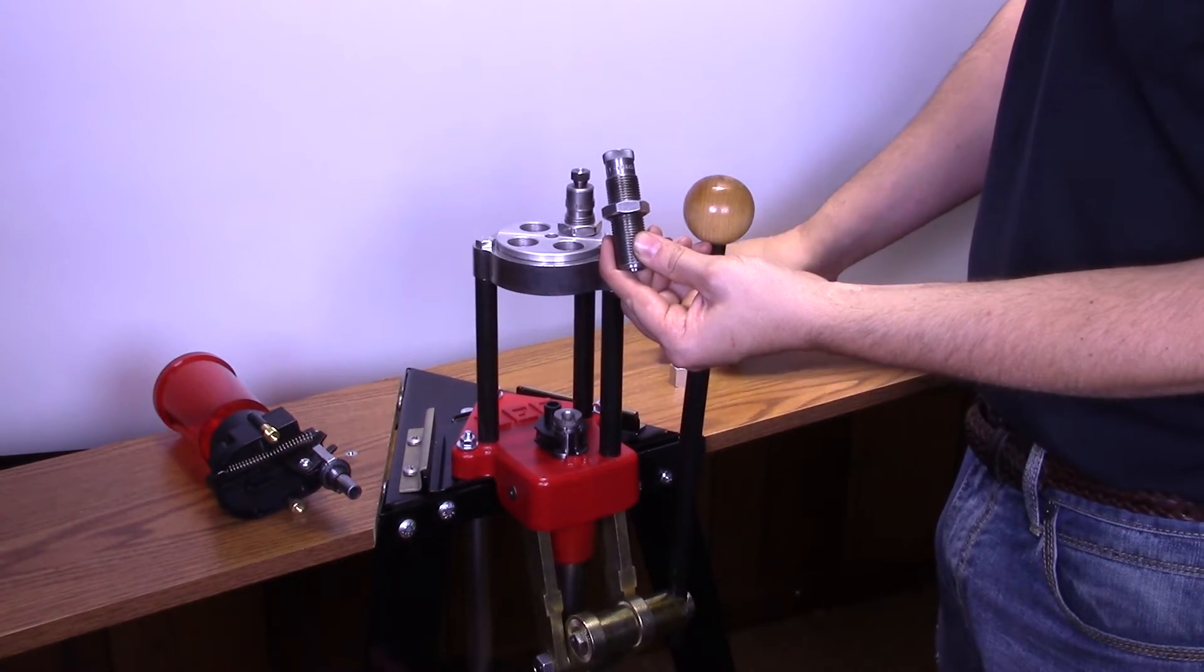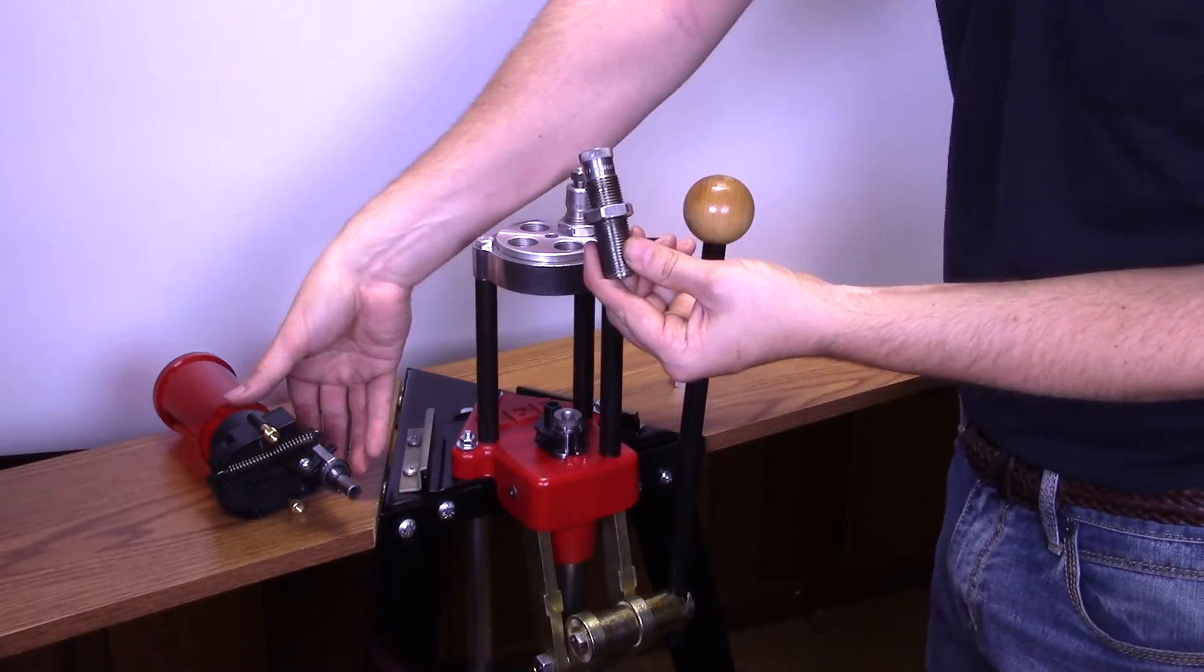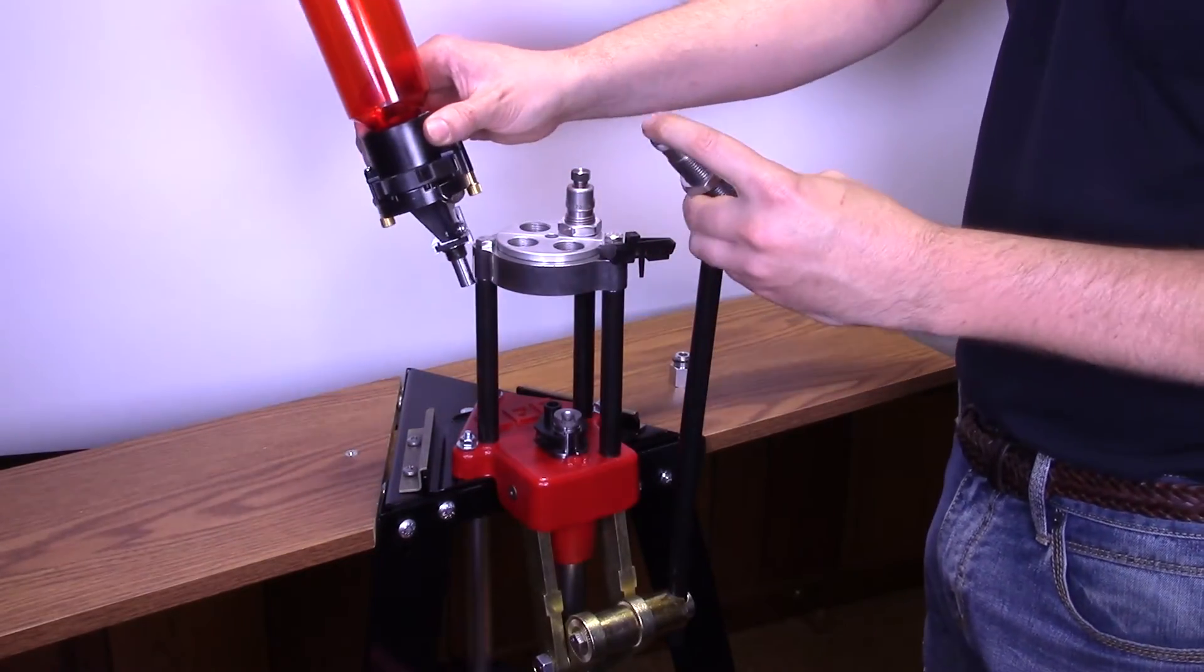Next, screw the charging die body onto your powder measure, making certain the actuator drop tube is inside.